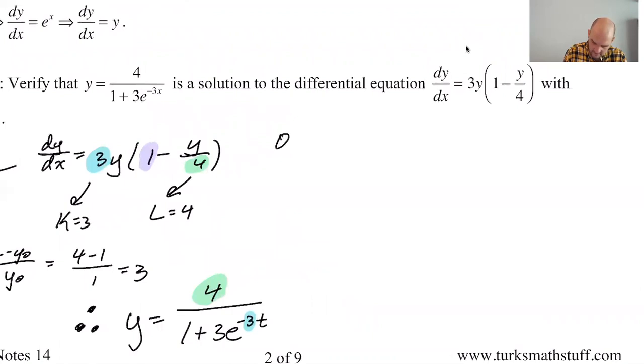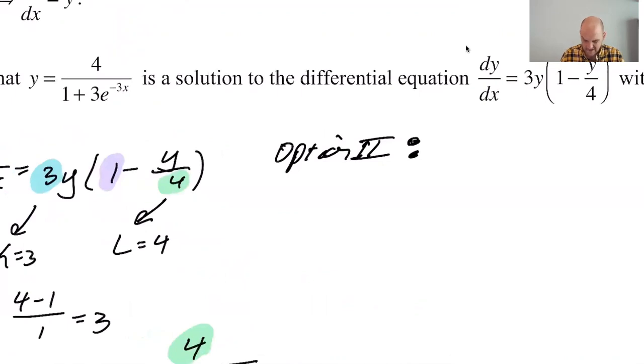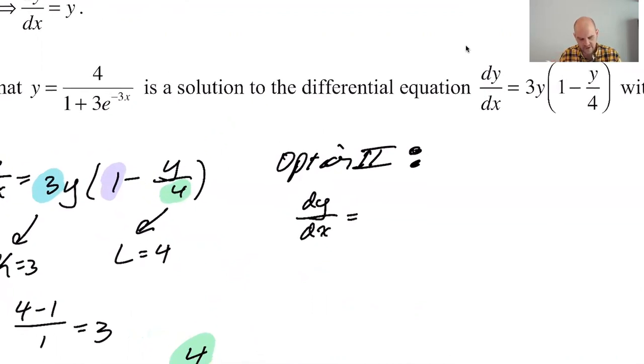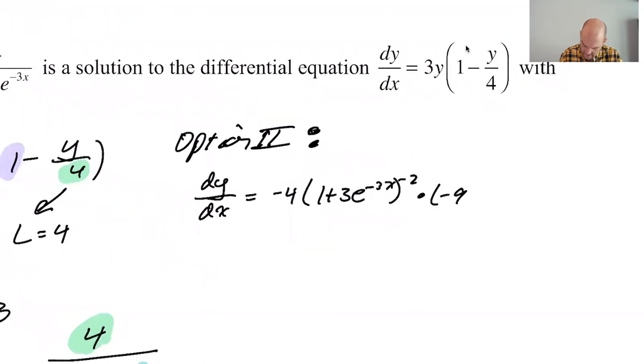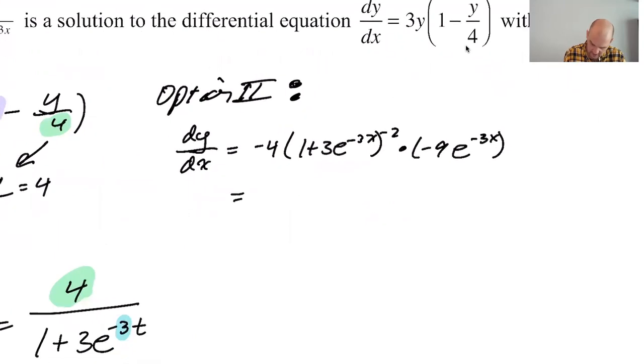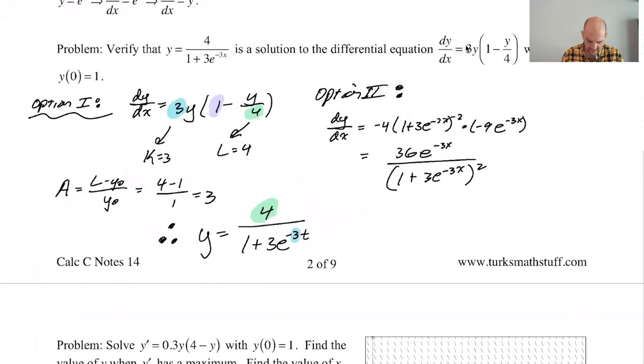The other option, too, is we can find dy dx from this, right? So I'm going to use, what am I going to use? Like, the chain rule, I guess. dy dx is, so I'm thinking of it as 4 times that thing to the negative first. So it's going to be negative 4, this thing, to the negative second, times the derivative of that thing, which is negative 9e to the negative 3x. And then I can simplify that to something, 36e to the negative 3x over 1 plus 3e to the negative 3x squared. Okay, so I can do that. That's one version of the derivative. I'm going to run out of space.